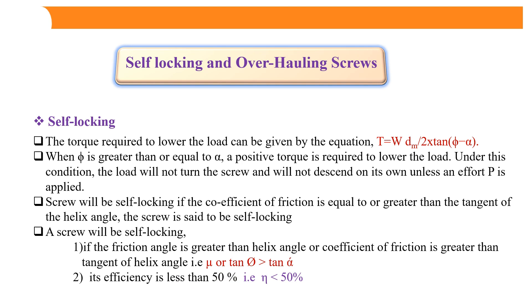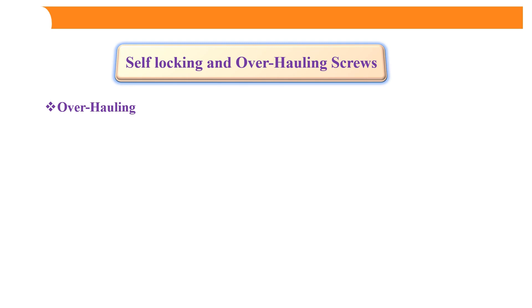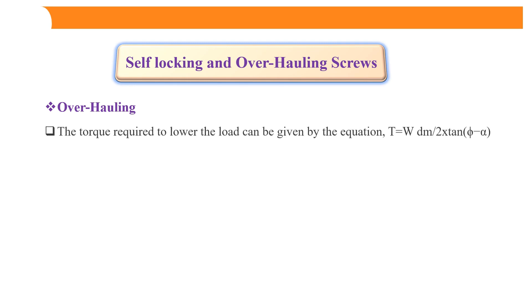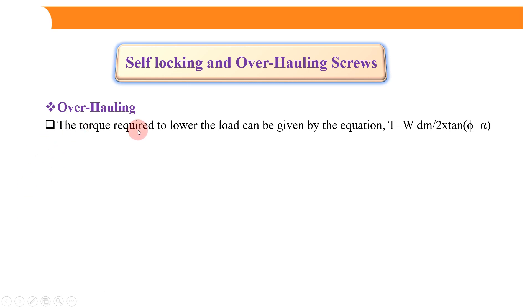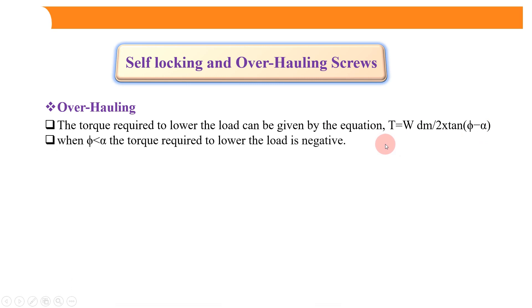Now, what do we mean by overhauling? The torque required to lower the load is given by T = W × Dm/2 × tan(φ − α). When φ is less than α — that is, when the friction angle is less than the helix angle — the torque required to lower the load becomes negative.